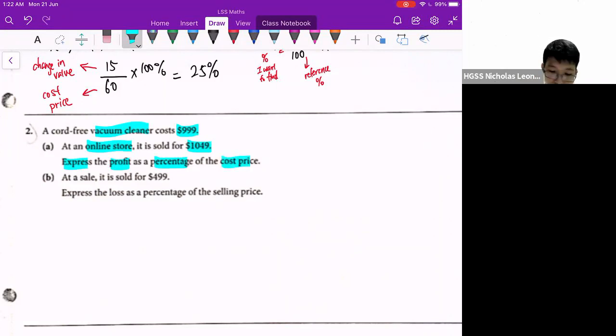Part B, they say that at a sale, maybe it's a clearout sale, it sells at a lower price of $499. So express the loss as a percentage of the selling price. Something to take note is that you must always take note what is the base reference that they ask you to reference it to. Is it the cost price or is it the selling price? We just need to take note of the question before you work out your working.